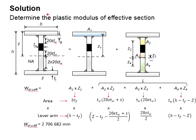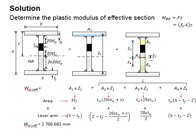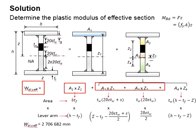Next, you need to determine the plastic modulus of the effective section, where the ineffective sections are ignored. To determine the moment resistance of a member, you multiply the force by the lever arm. The force is computed by multiplying the stress and the area, and the lever arm refers to the dimensions of the member. Section modulus is a function of area times lever arm, so to compute the effective section modulus, multiply each respective area by its lever arm.